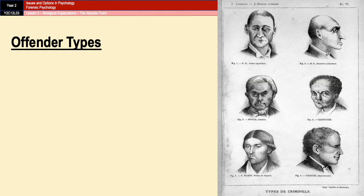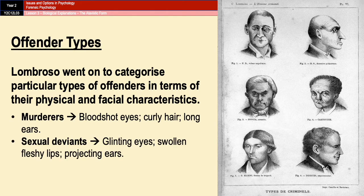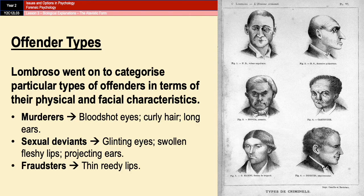Lombroso also went further and said that particular types of offenders have specific physical and facial characteristics. For example, murderers, sexual deviants, and fraudsters would all possess different facial characteristics that meant you could determine what type of criminal somebody was just by looking at them. Murderers would have bloodshot eyes, curly hair, and long ears, whereas fraudsters are more likely to have thin, reedy lips. You can see an excerpt from his book — a French translation — showing different types of criminals including a thief, a poisoner, and an assassin.